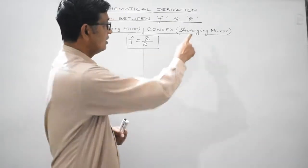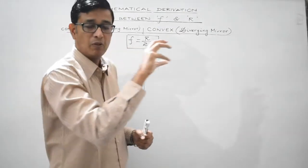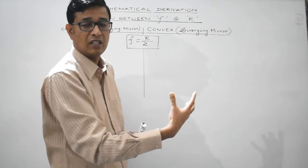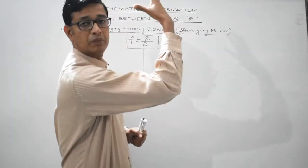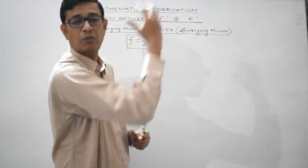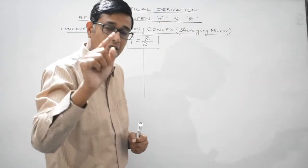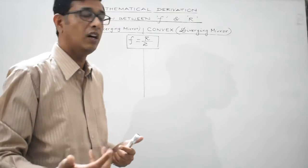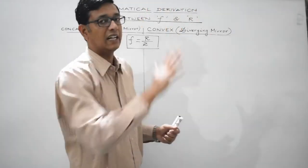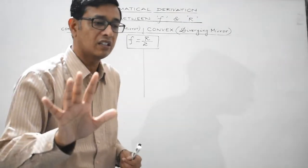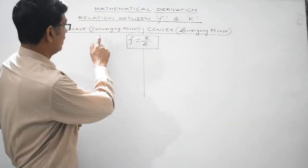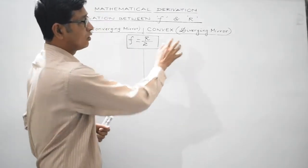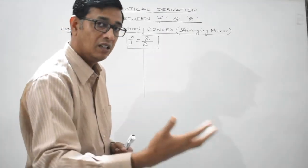On the other hand, in case of a convex mirror, when a parallel beam of light is incident, after reflection the reflected rays appear to be coming from a particular point — they appear to diverge from a particular point on the principal axis — and that point is known as the principal focus. That's why a convex mirror is also known as a diverging mirror. The focal length of a concave mirror is taken as negative, while the focal length of a convex mirror is taken as positive.